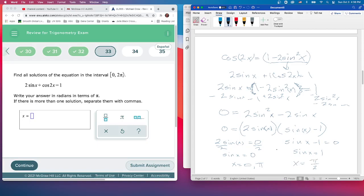We end up with three solutions. Remember, 2π is not included in this interval because of the parenthesis—it goes all the way up to 2π but not including it. Our answers are 0, π, and π/2. If you want to put them in order, that would be 0, π/2, and π. That's question 33.